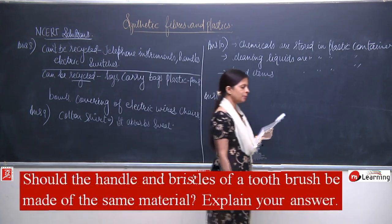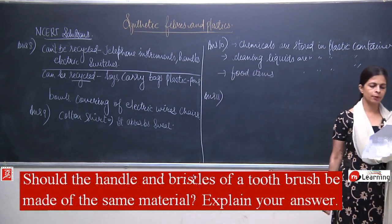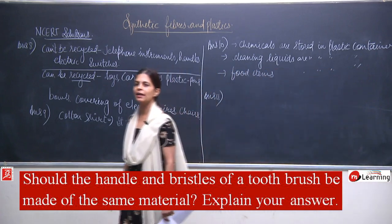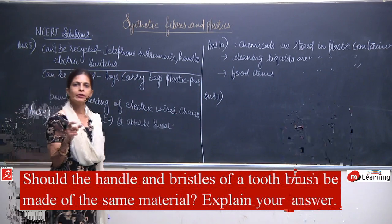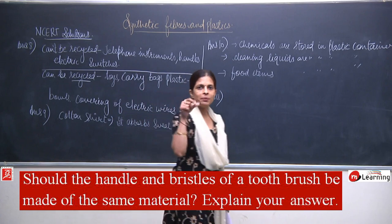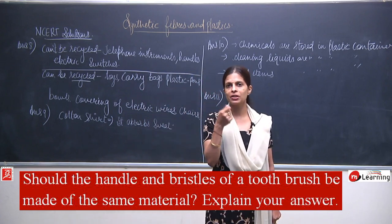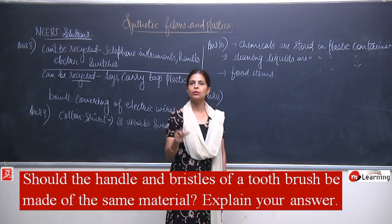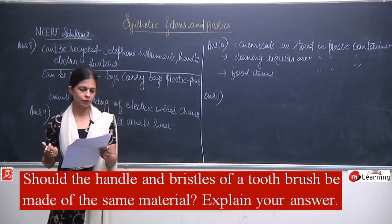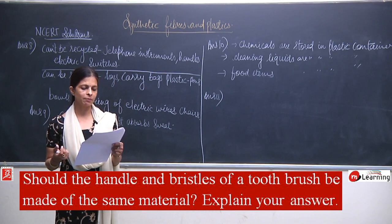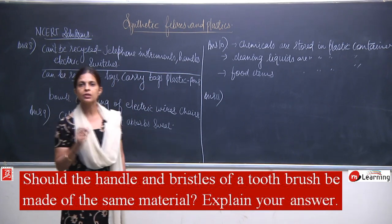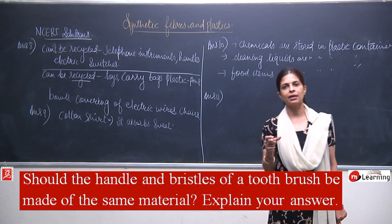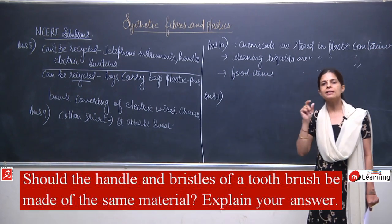Question number 11: Should the handle and bristles of a toothbrush be made of the same material? Both parts of a toothbrush are made of plastic, but the question asks whether the same plastic should be used for both. Can both parts be made with a single material?